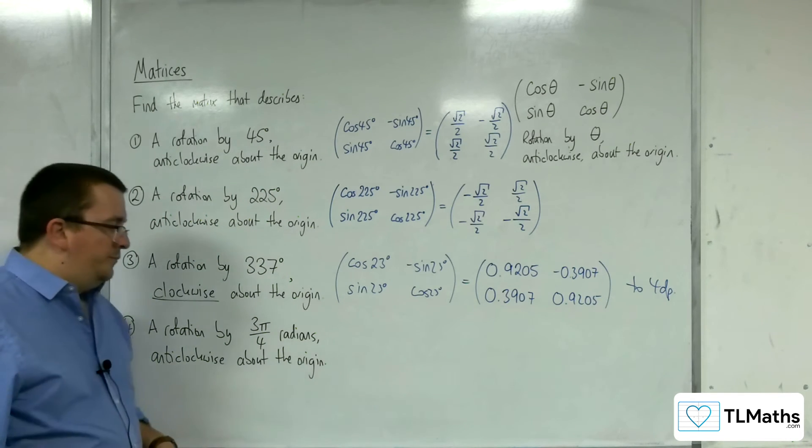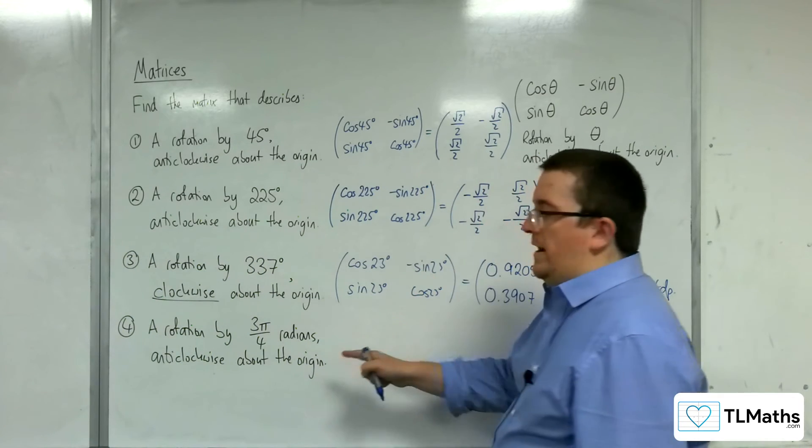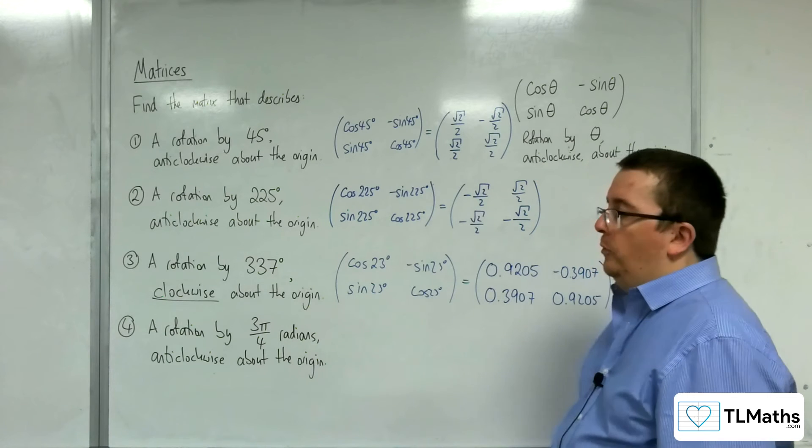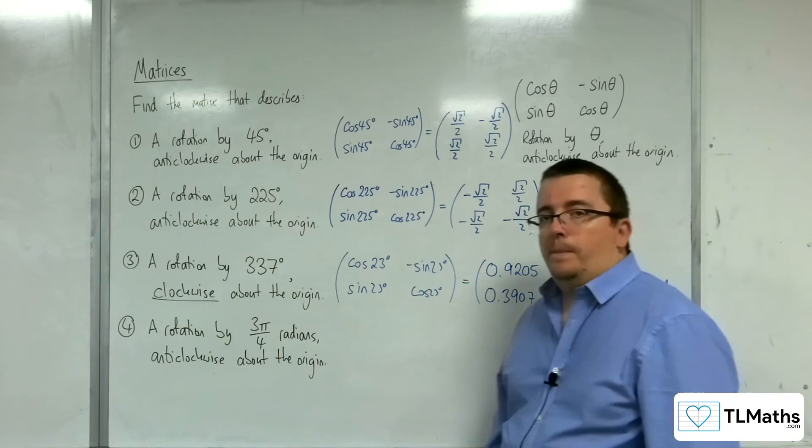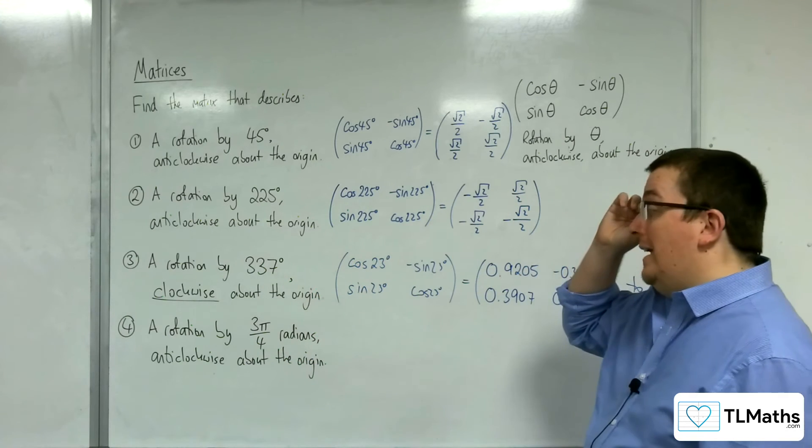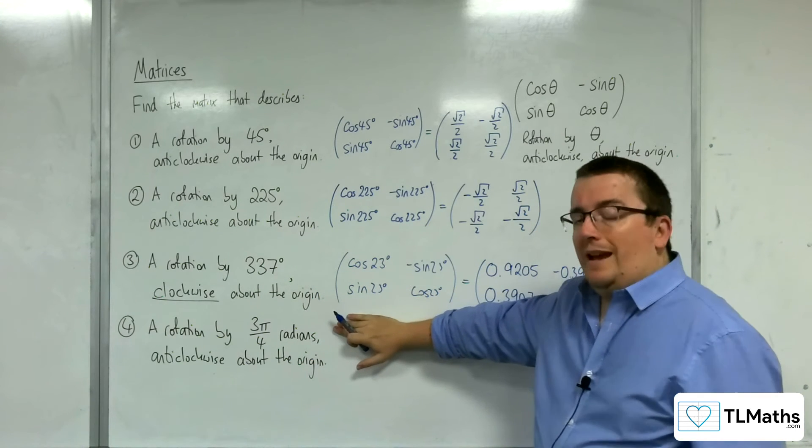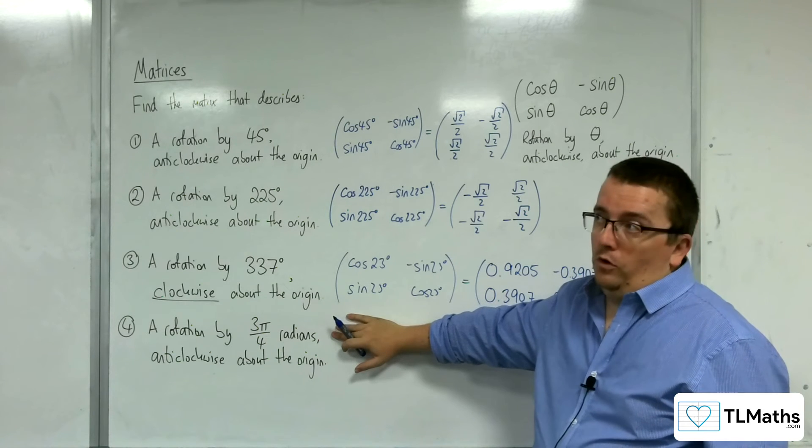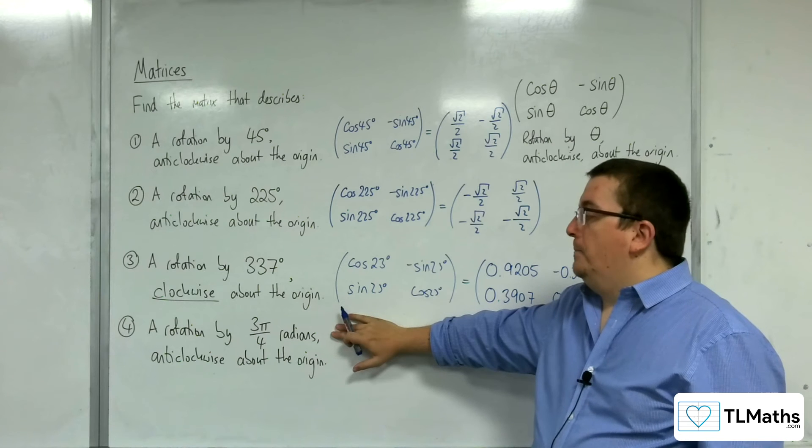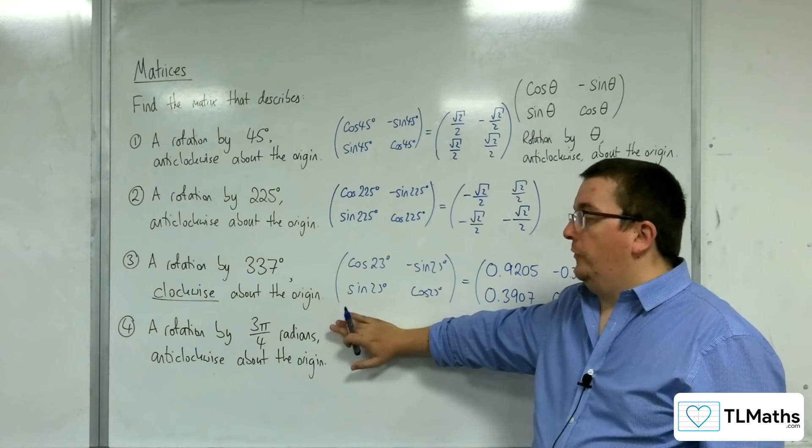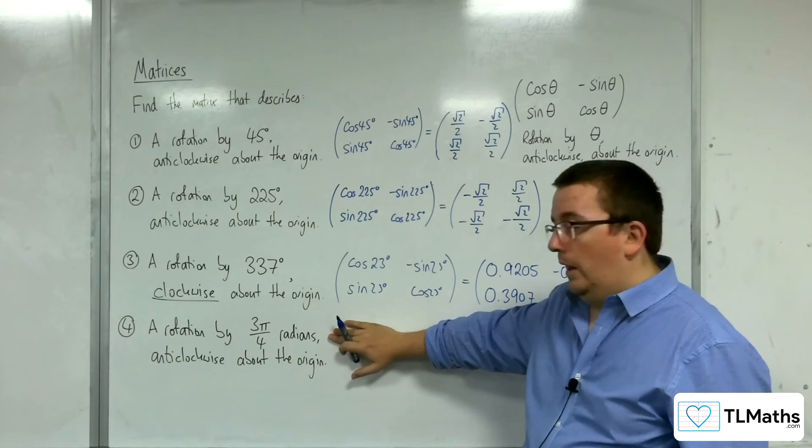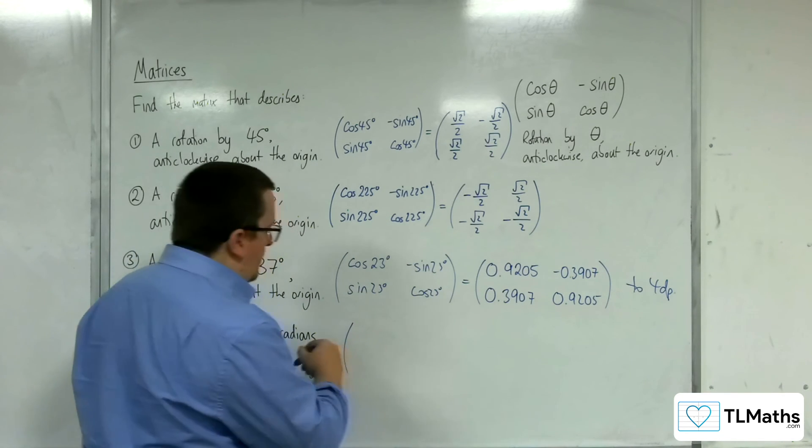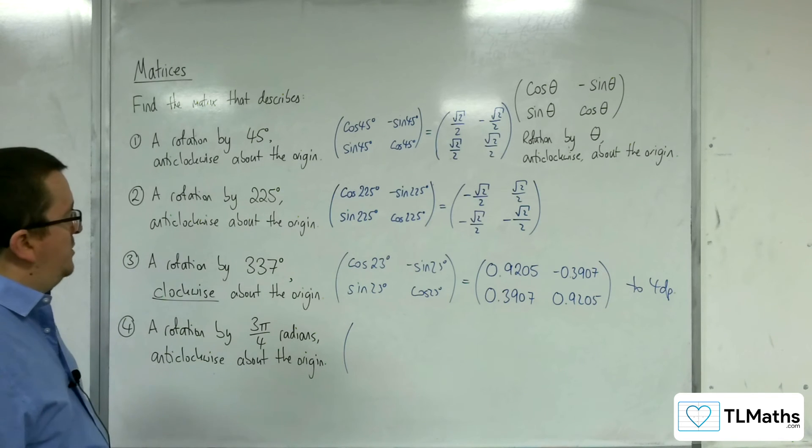Now the last one, the angle is given in radians. So you need to have learnt radian measure by this point to really understand what's going on here. Now radian measure is taught in A-level maths, and it may well be taught to you before you learn it in A-level maths, because of its importance on this course as well. So I'm going to go forward with this, assuming that you've gone to have a look at it, if you've not met it.